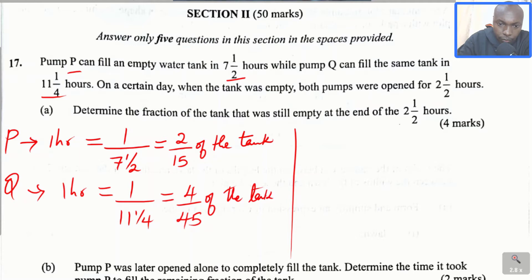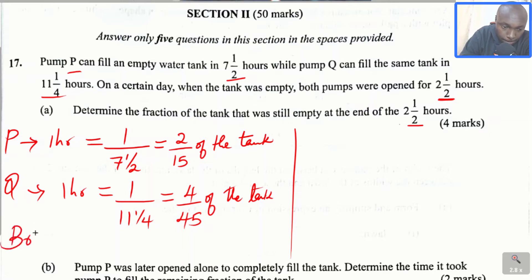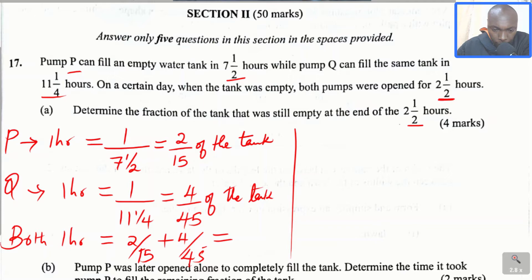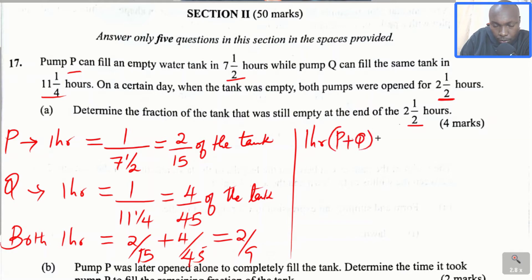The question asks for the fraction of the tank still empty at the end of 2 and a half hours. After getting the fraction filled by P in 1 hour and Q in 1 hour, what about both pumps in 1 hour? We take 2 over 15 plus 4 divided by 45, and when you add these, you get 2 over 9. So P plus Q together will fill 2 over 9 of the tank in 1 hour.